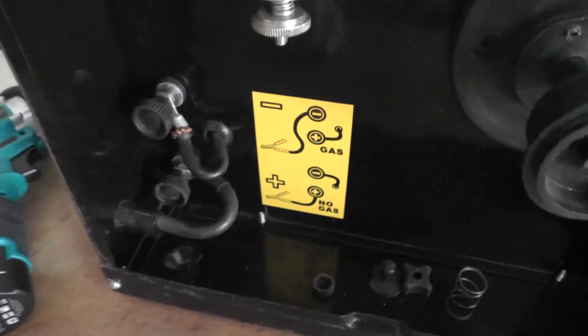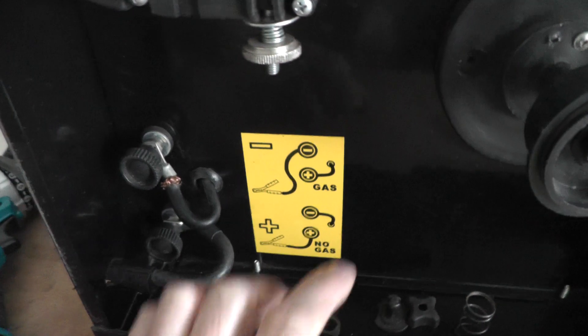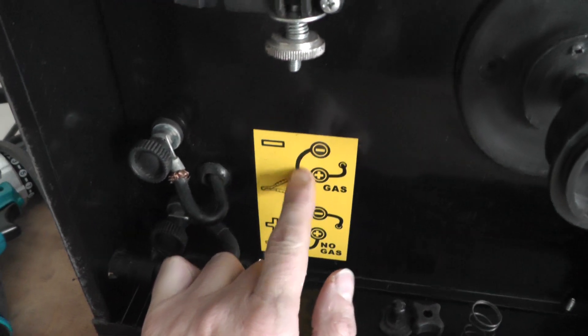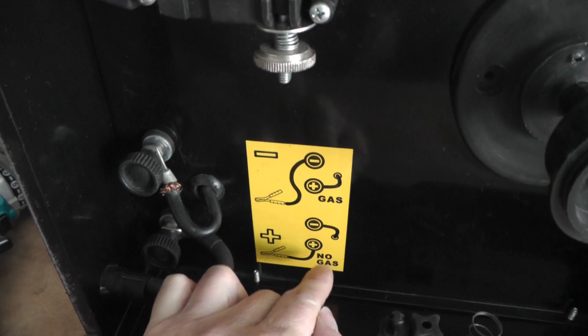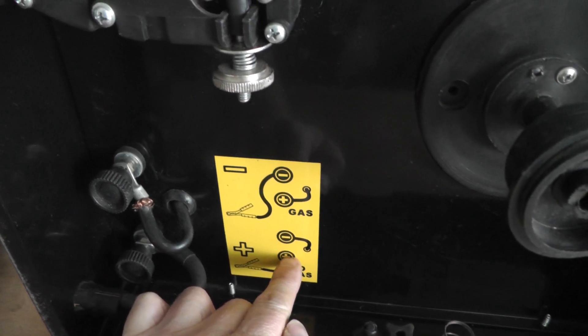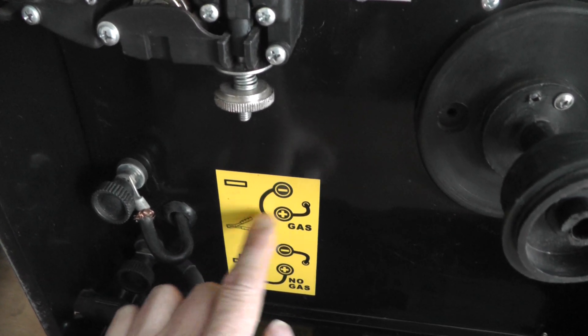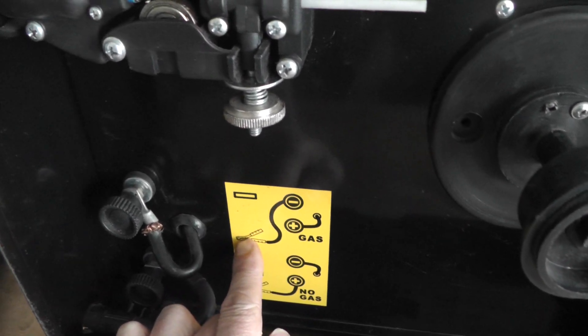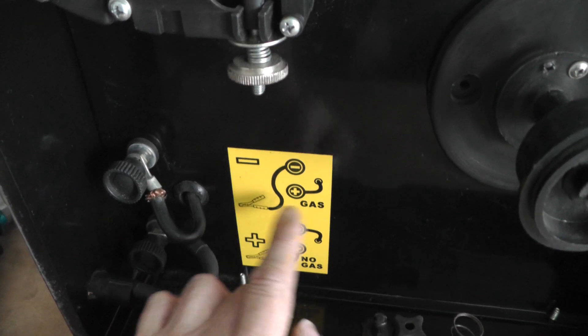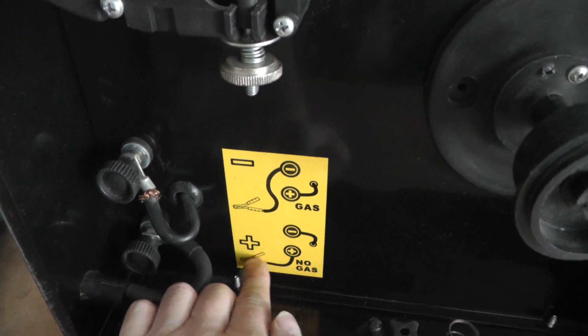I'm going to change these wires over. It says that your electrode has to be negative for gas, and your earth clamp has to be negative for gas and positive for no gas.